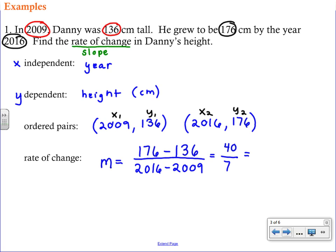So when we take 40 divided by 7, we get 5.7. And notice that your units in the numerator were centimeters. And the units in the denominator was year. And so our overall label here is 5.7 centimeters per year. And that just makes a little bit more sense. I can visualize that. So Danny grew 5.7 centimeters per year during that time period in his life.